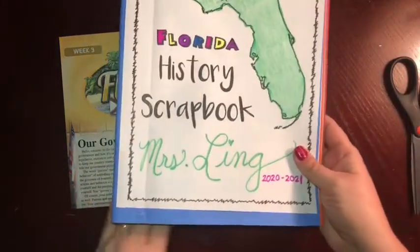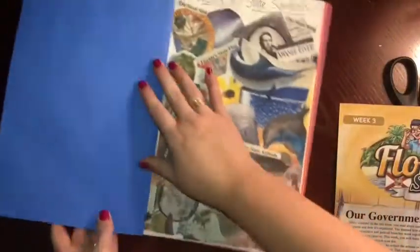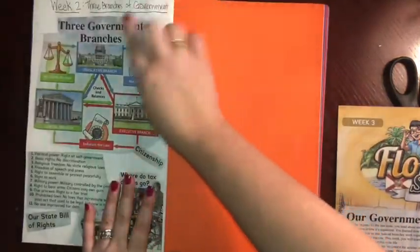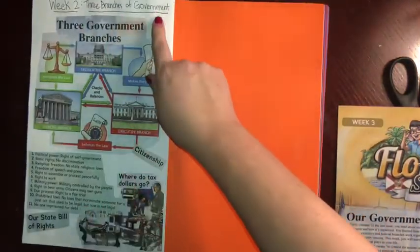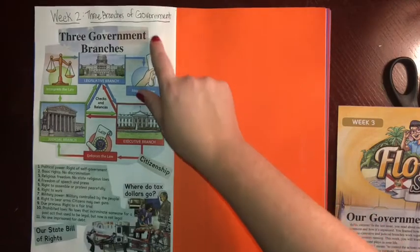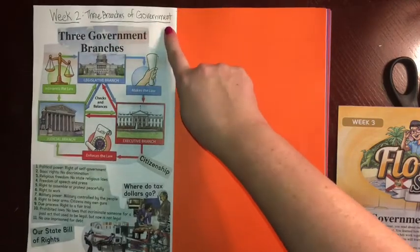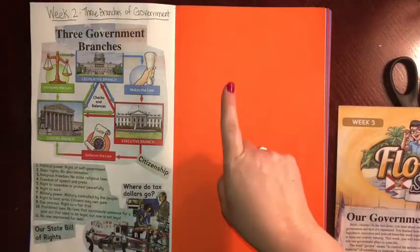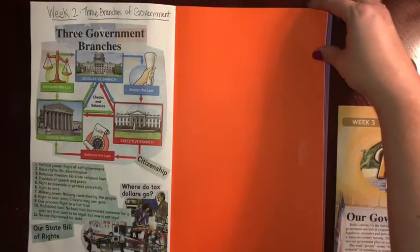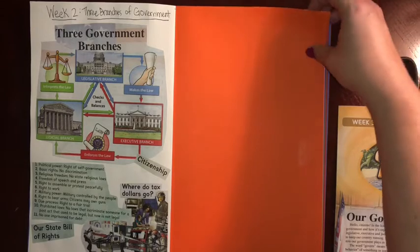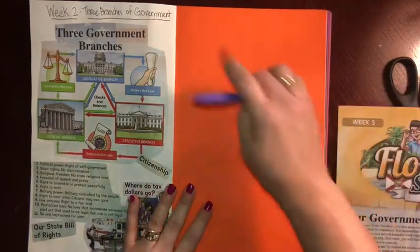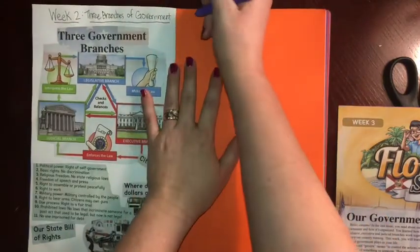Make sure you have also taken out your Florida History Scrapbook. We have already completed two pages of our scrapbook — the first week was state symbols and the second week was the three branches of government. Remember what we talked about yesterday: you have one page to use, so please do not use more than that. If you use more than one page each week you're going to run out of pages, because we're going to be using this all year.